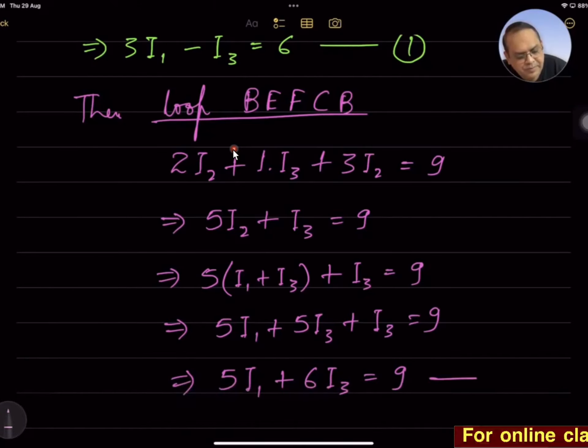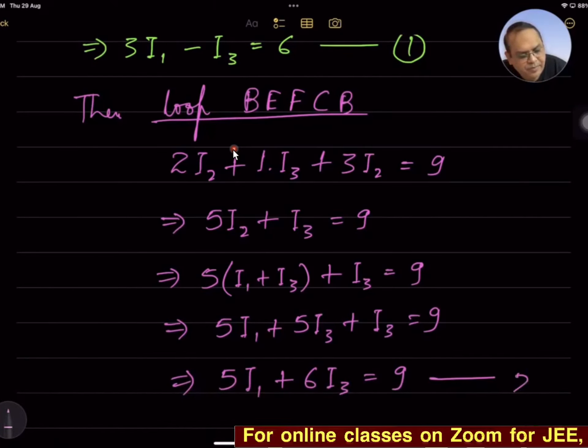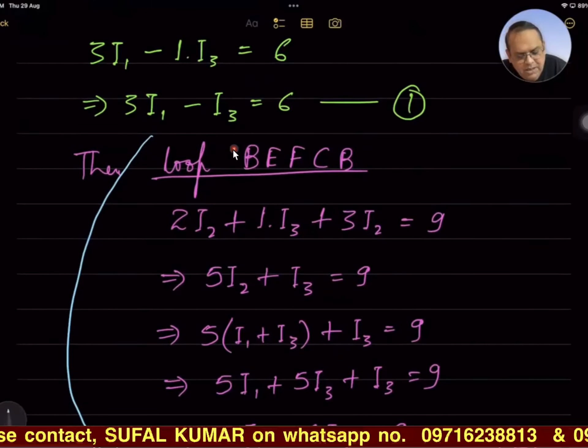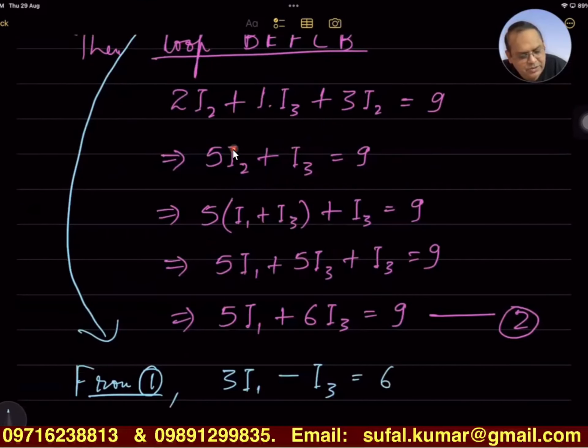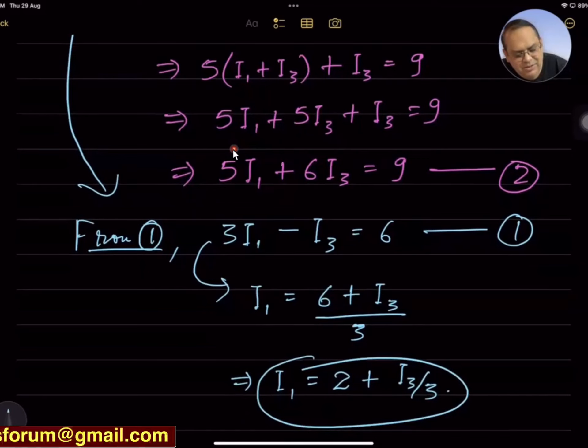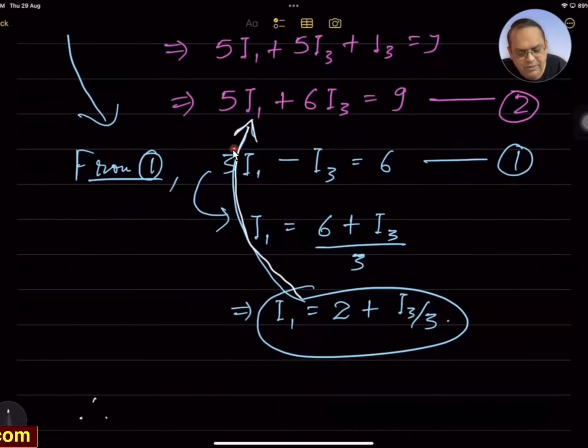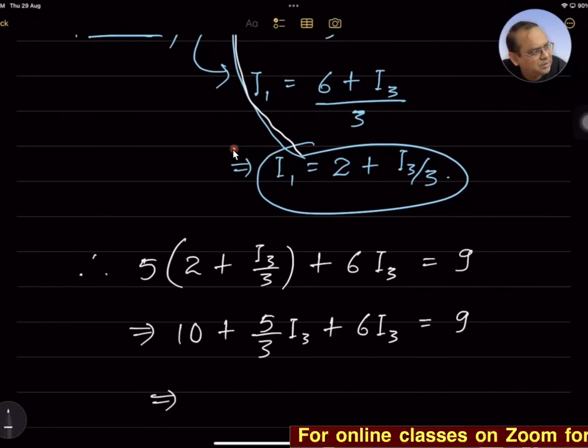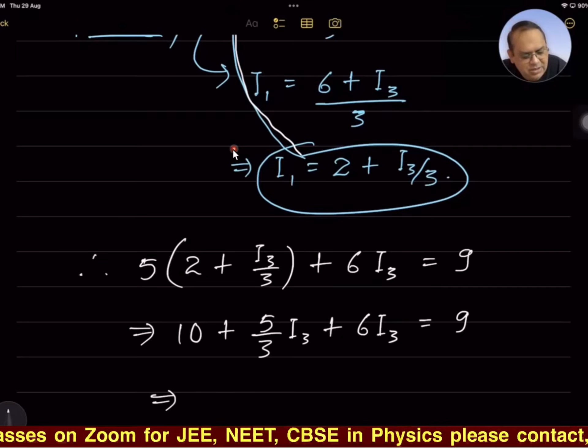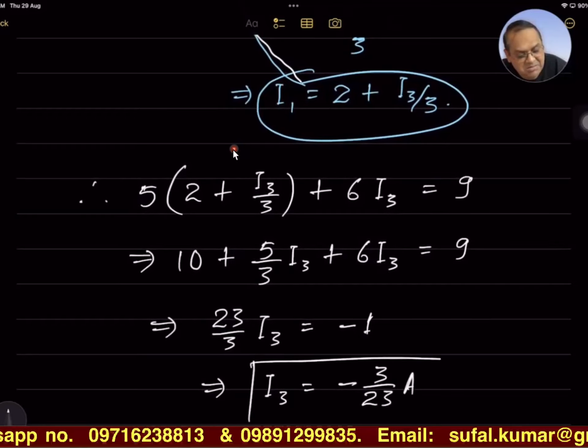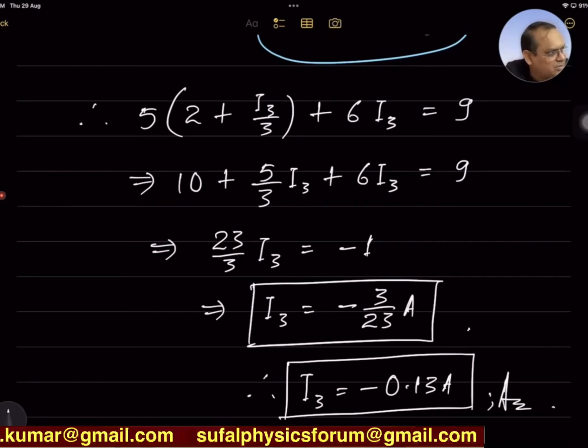If we add up these two equations, +I₃ and -I₃ are getting cancelled. From equation we get 3I₁ + 2I₂ = 15. Just to eliminate I₁, we substitute the value, therefore 5I₃—only one variable is left. Let's see whether we could tally our answer. I₃ = -3/23 ampere. We had to go two, three steps of calculation extra.